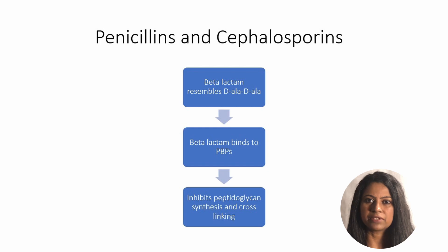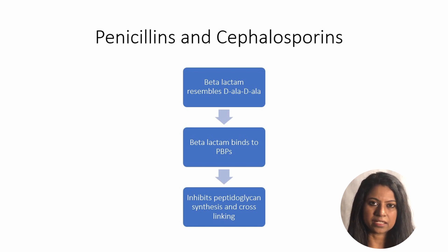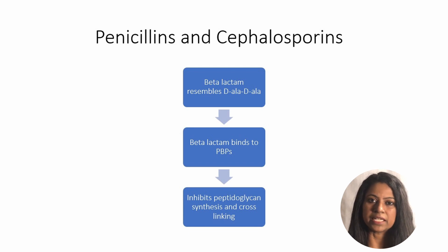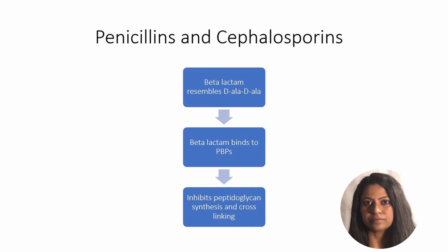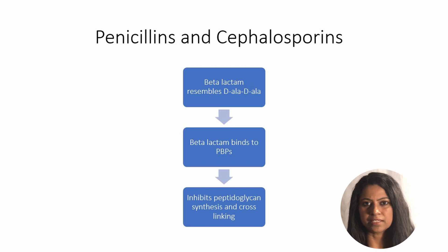Penicillins and cephalosporins have the same mechanism of action. There is a component in the cell wall of bacteria called D-alanine-D-alanine, which normally binds to a protein called penicillin binding protein. There are various types of penicillin binding proteins. Penicillins and cephalosporins have a beta-lactam ring which mimics this D-alanine-D-alanine. The beta-lactam ring binds to the penicillin binding proteins, which inhibits the synthesis of peptidoglycan in the cell wall of bacteria.